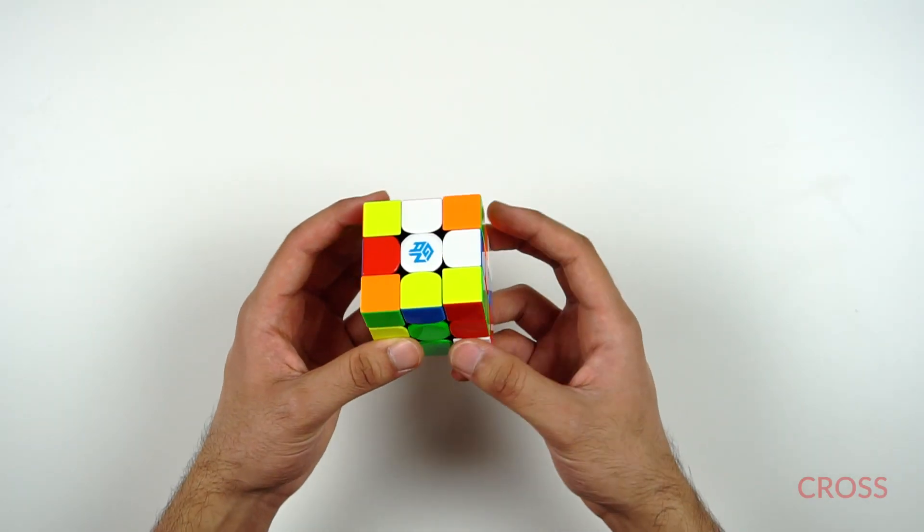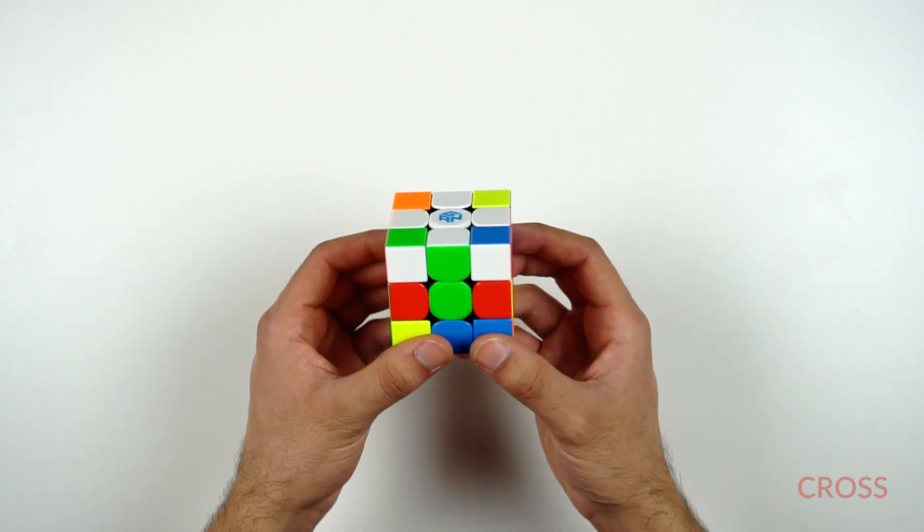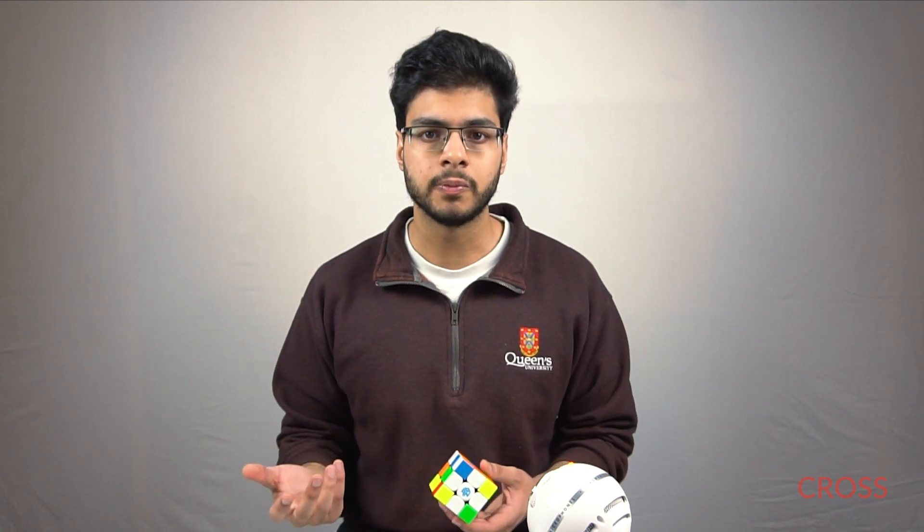The cross is something that you already know from beginner's method. That's nice that one step carries over to CFOP, and it's basically the first step to solving the first layer, which involves solving these four edge pieces. Cubers mostly solve the cross completely intuitively by looking at how the edge pieces are moving around the cube, and you'll get a lot better at that with practice.